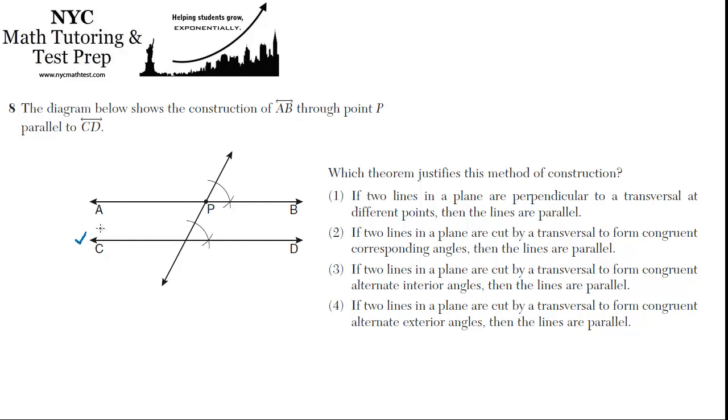So CD already existed. And they were trying to construct AB, a parallel line, by using this transversal.